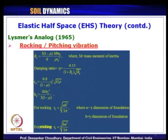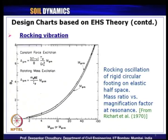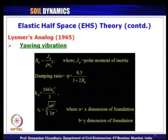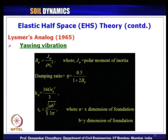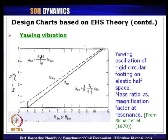For rocking or pitching mode of vibration, we have seen the expressions for modified mass ratio, damping ratio, and so on. Then the design charts to find out the frequency at resonance and to compute the displacement magnitude at resonance. For yawing or torsional mode of vibration using Lysmer's analog, the expression for modified mass ratio, damping ratio, and stiffness was mentioned. Then the design charts for different types of excitation — constant force type or rotating mass type — to obtain the frequency at resonance and the displacement amplitude at resonance.